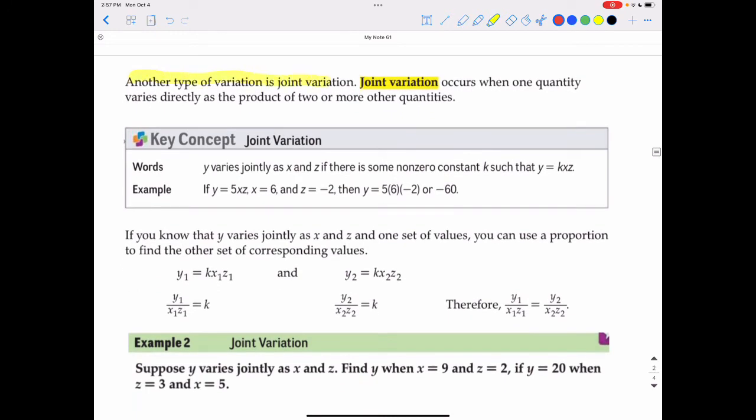Another type of variation is joint variation. Joint variation occurs when one quantity varies directly as the product of two or more other quantities. Notice that it says y1 over x1 times z1 equals y2 over x2 times z2. So it's going to be the product of two or more quantities.